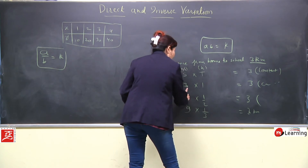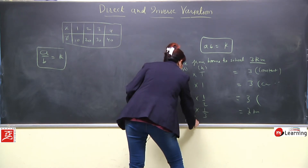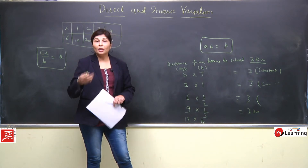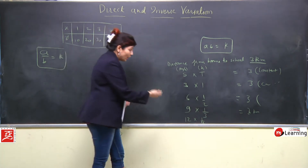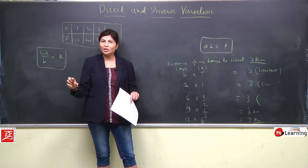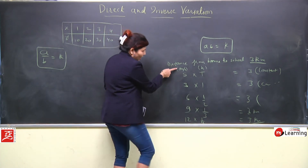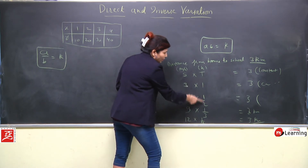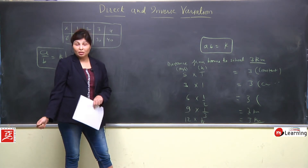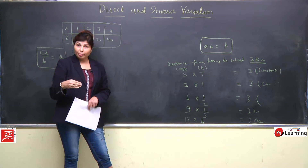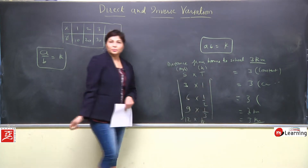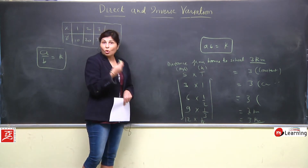Clearly dikh raha hai ki speed increase hui toh time decrease hua — pehle 1 hour, phir half hour, phir 1/3, phir 1/4 means 15 minutes, kyunki 60 minutes ka pura 1 hour hota hai. Toh clearly speed increase huwi toh time decrease hua — inverse ho gaya, just opposite ka case ho gaya.